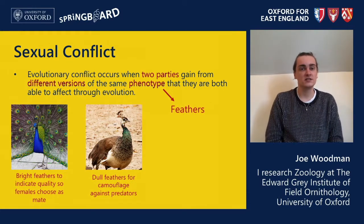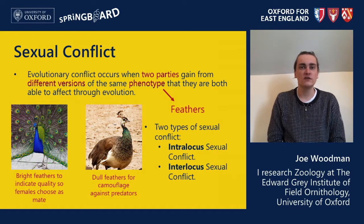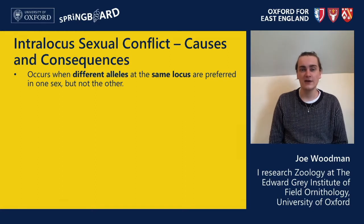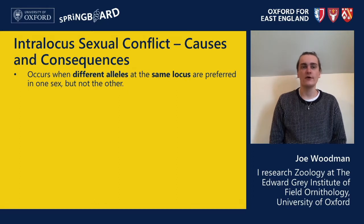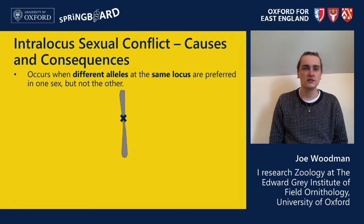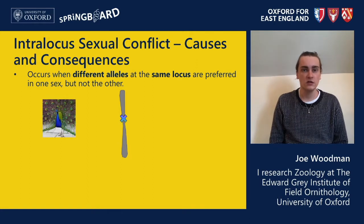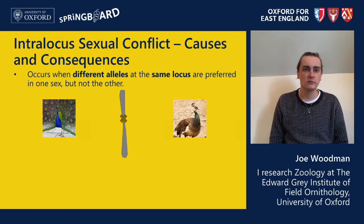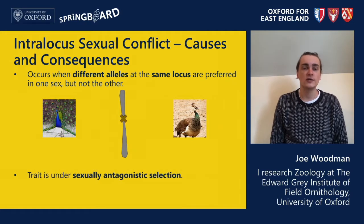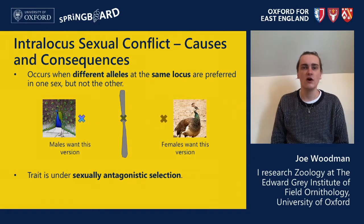Sexual conflict exists in two forms: intralocus and interlocus, which differ at the genetic level but have big differences for individuals and populations. Intralocus sexual conflict arises when different alleles at the same locus are preferred in one sex but not the other. Say there's a locus on a chromosome that controls feather colour — males want a version that makes colourful feathers whereas females want a version that makes them duller. This causes conflict because if the gene expression moves males towards their optimum phenotype, colourful feathers, it moves in the opposite direction for females. This trait is under sexually antagonistic selection, where an evolutionary tug of war means neither sex reaches its adaptive peak.